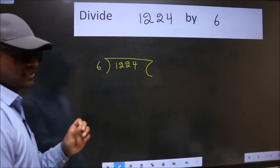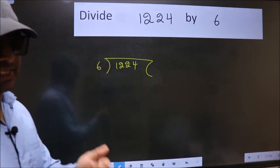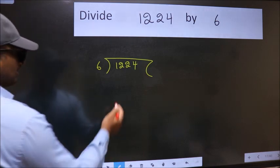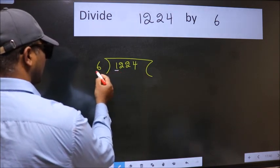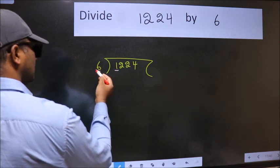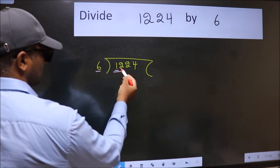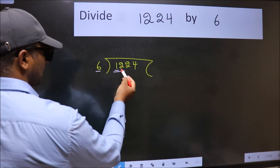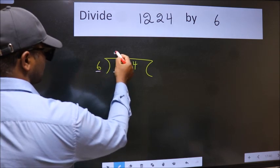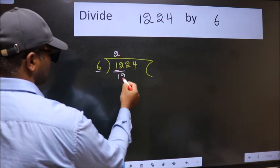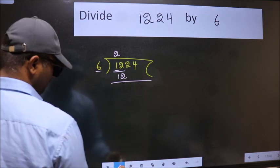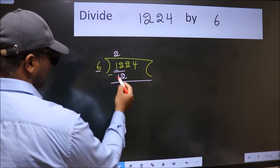This is your step 1. Next, here we have 1 and here 6. 1 is smaller than 6, so we should take two numbers: 12. When do we get 12 in 6 table? 6 twos, 12. Now we should subtract. We get 0.